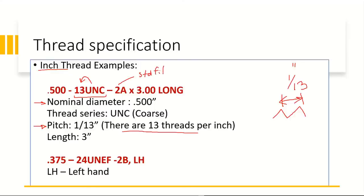The external thread designation is indicated by the letter A, followed by the length — in this case 3.00 inches. Sometimes additional parameters are included, such as LH, which means this is a left-hand thread instead of a right-hand thread. In practice, for example with bicycle pedals, one side is right-hand and the other is left-hand when attached to the crankshaft, to prevent the threads from wearing out. Left-hand threads must be indicated in the drawing as well.